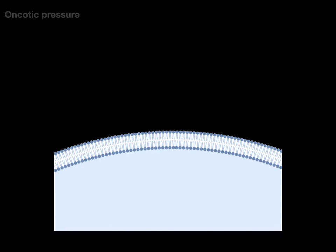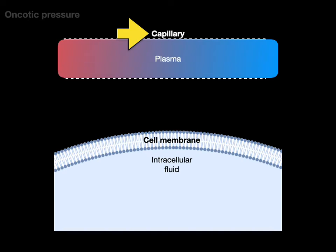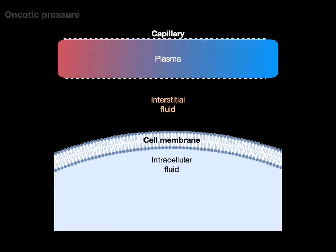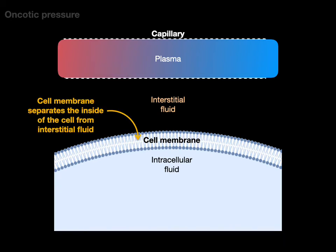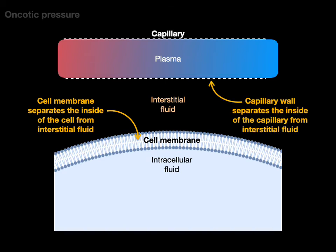Now to show that — here's a cell membrane, and inside the cell membrane is intracellular fluid, and there's a capillary that has plasma, and in the space in between we call the interstitial space with interstitial fluid. The cell membrane separates the inside of the cell from the interstitial fluid, and the capillary wall separates the inside of the capillary from the interstitial fluid.